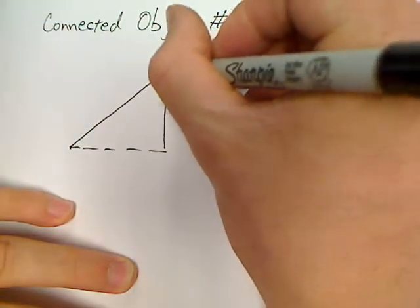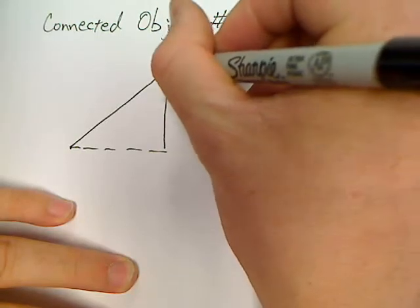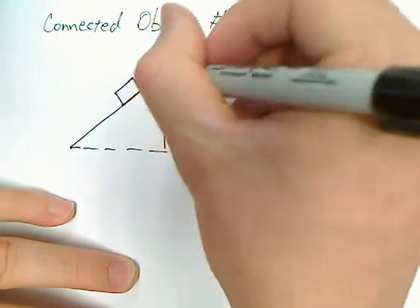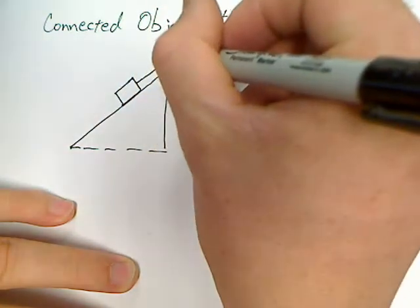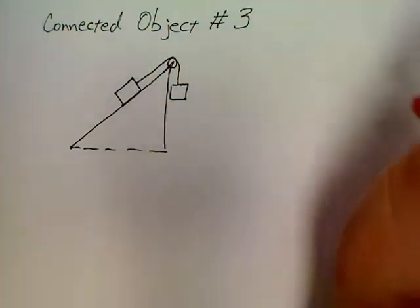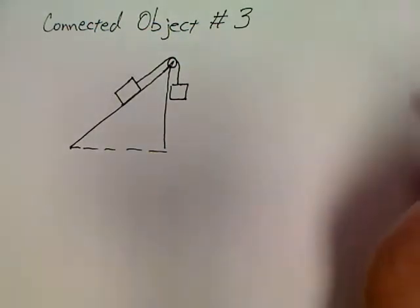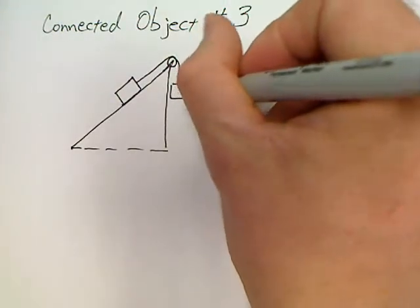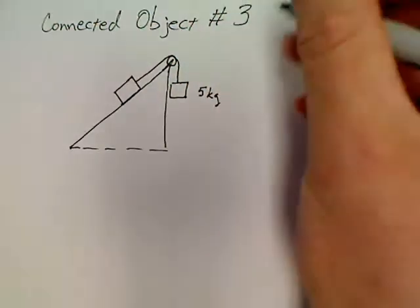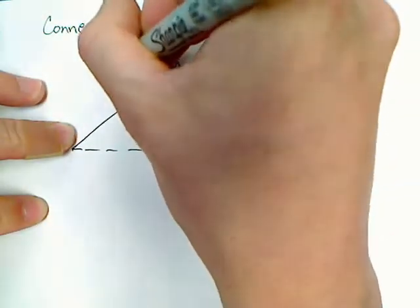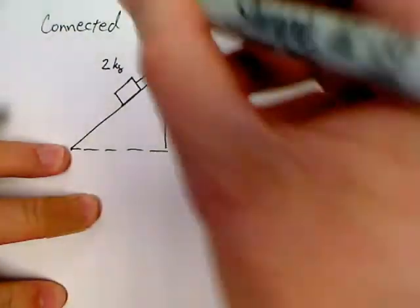This is one other type of problem that you might end up working. In this one, we've got a pulley at the top and a block on an inclined plane. Now, if we wanted to make it easier, we wouldn't have friction in here, but I'm going to have a friction in it. I'm going to call this five kilograms and I'm going to say that the other block weighs two kilograms.